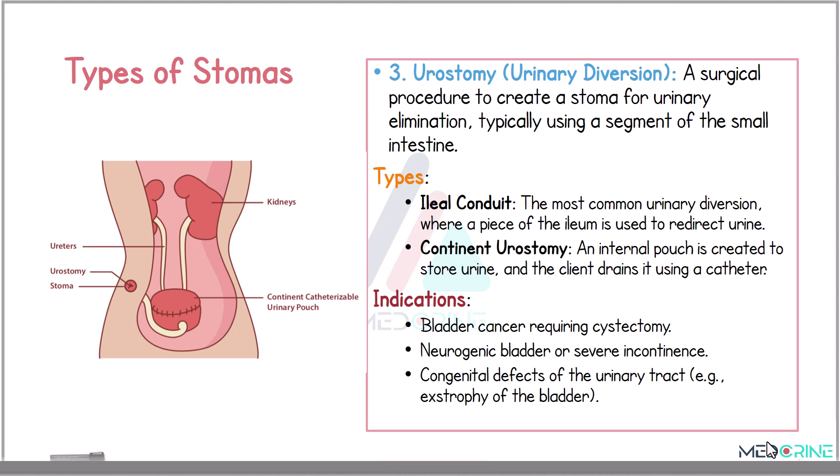Some of the indications for a urostomy procedure are bladder cancer requiring cystectomy, a neurogenic bladder or severe incontinence, and congenital defects of the urinary tract — for example, exstrophy of the bladder.